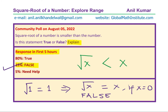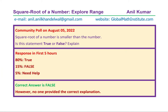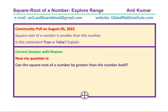However, the explanation is not good enough. What I am trying to say is that the correct answer is false, but no one provided the correct explanation. Because if you modify the question and look at it in a different way: can the square root of a number be greater than the number itself? We are looking at the question that square root of the number is less than x — can square root of a number be greater than x?